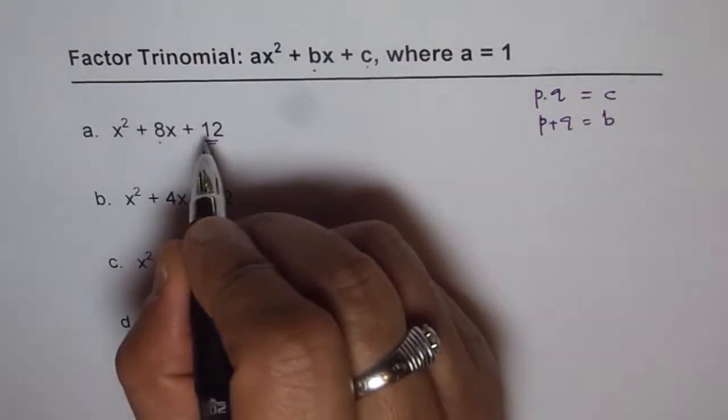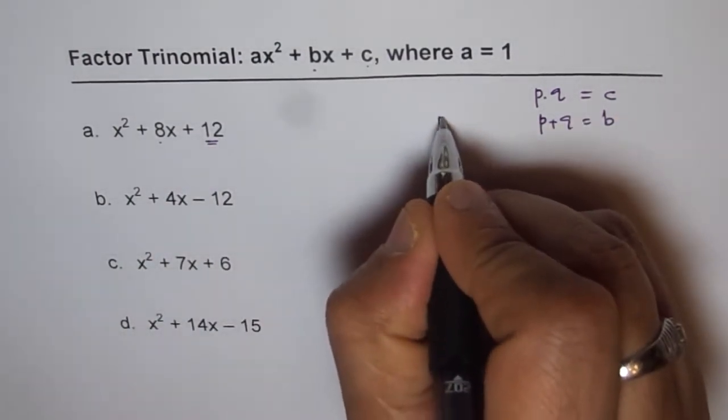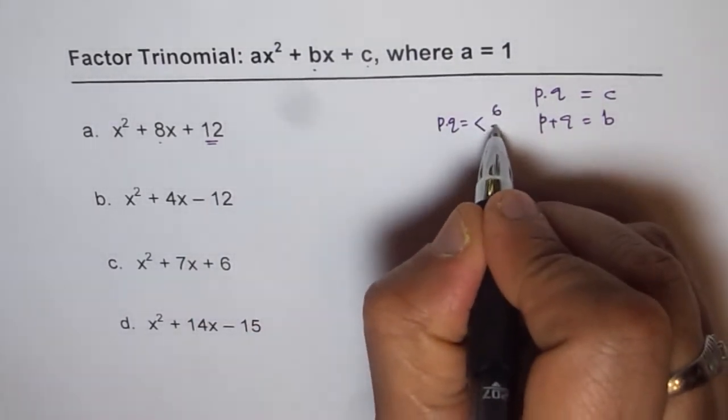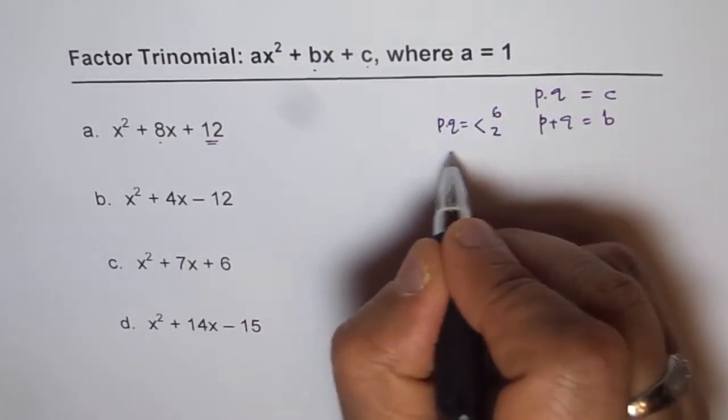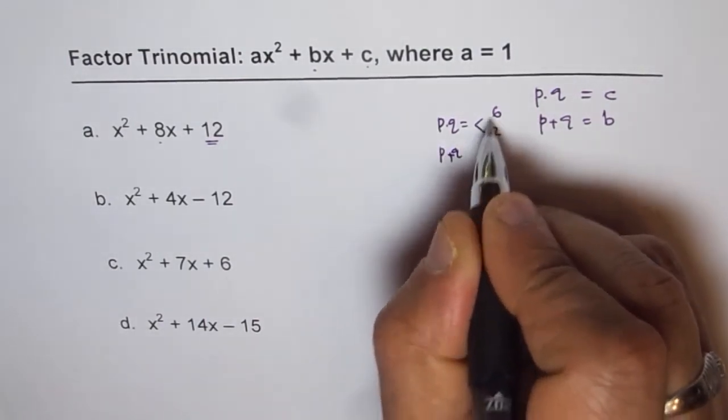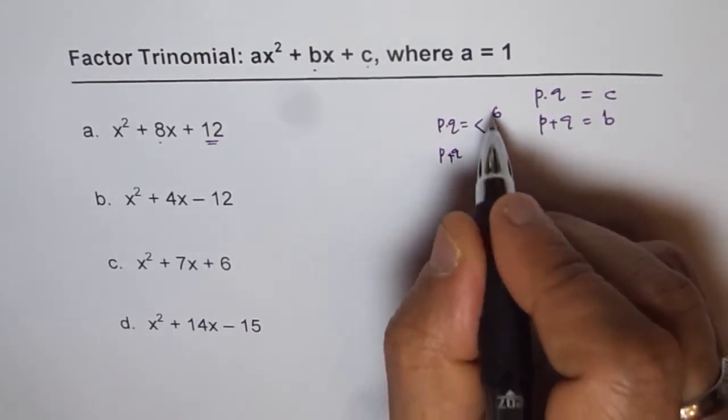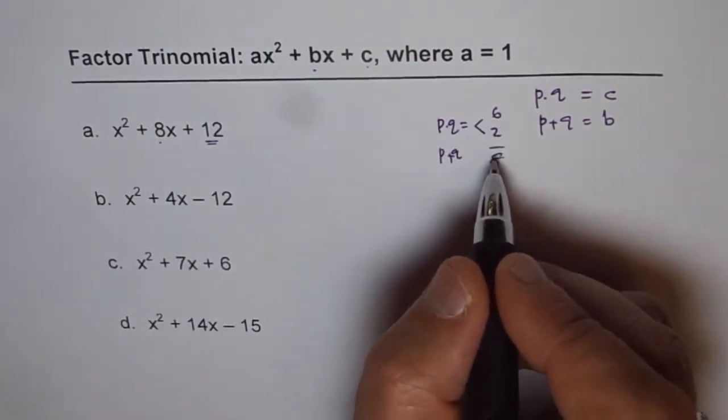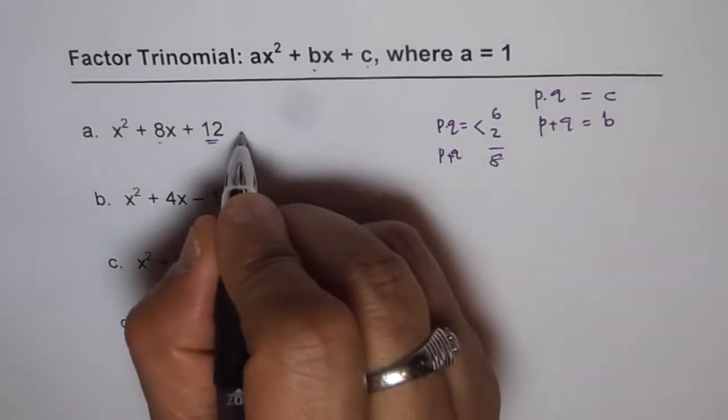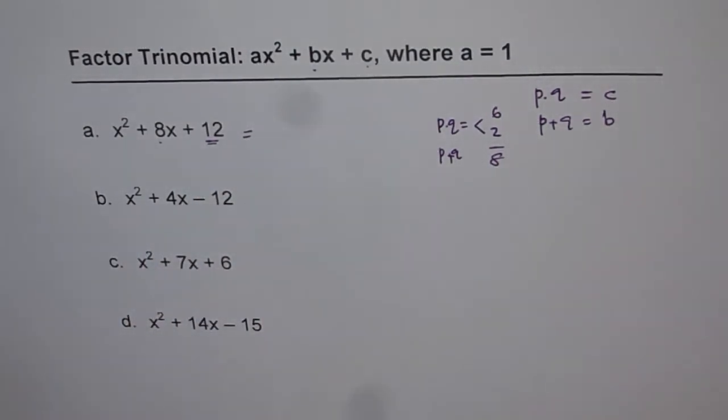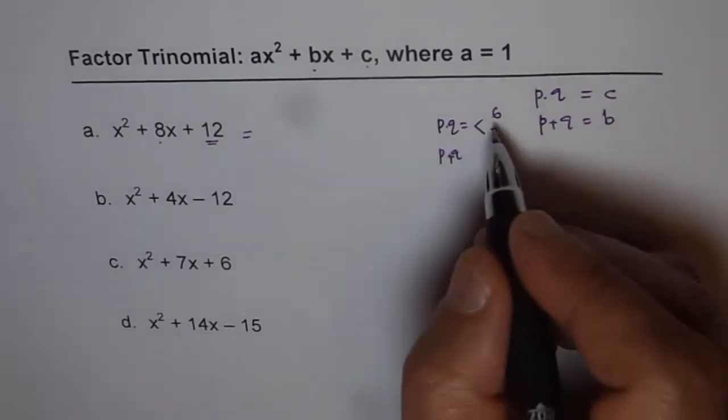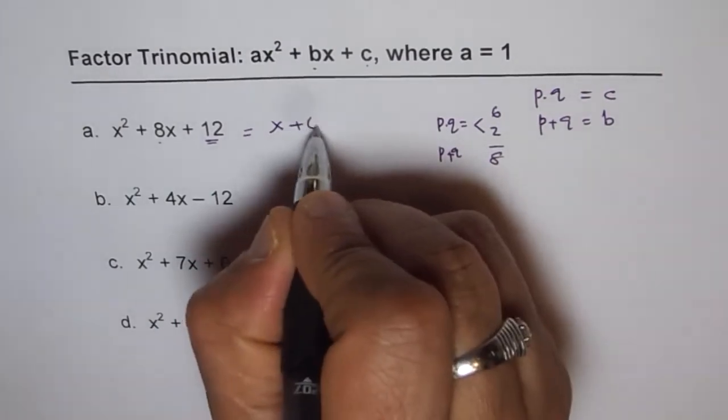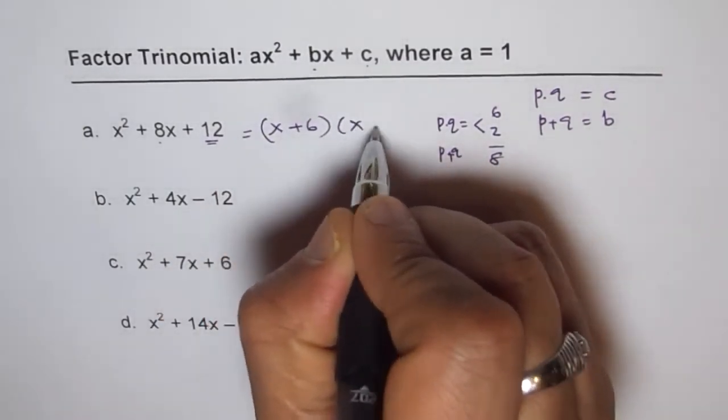The two magic numbers which will give us 12 are p times q, which are 6 and 2. When you add these two, p and q, you get 8. So that will satisfy our condition. So you can factor this since we know 6 times 2 is 12 and 6 plus 2 is 8. I can write this as (x + 6)(x + 2).